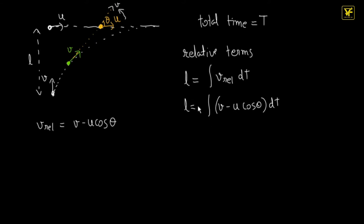We have to integrate this to find the time, but we don't know how to calculate this directly because theta is constantly changing with respect to time. One way would be if you have a relation of theta with respect to time, but it seems very unlikely to find it easily here. So I'll show you an easier way to solve this question — you don't even have to integrate and can find the answer completely without any integration.